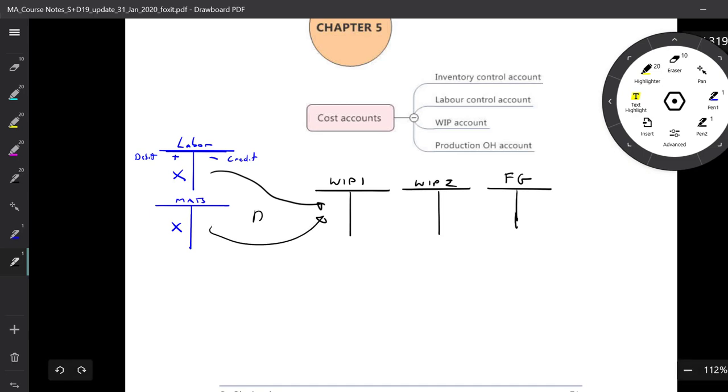That would be direct, easy to trace to the cost unit. Then at some point, we do more work to the WIP, out from WIP 1 into WIP 2. We will allocate more direct costs. And then finally, when we're all done, it becomes the finished goods.